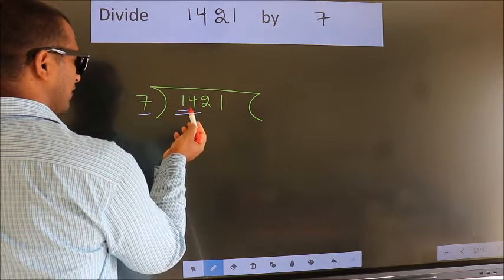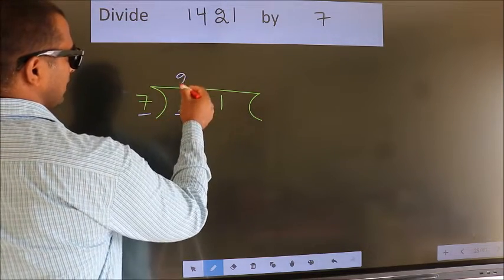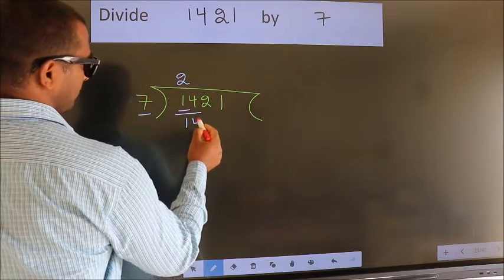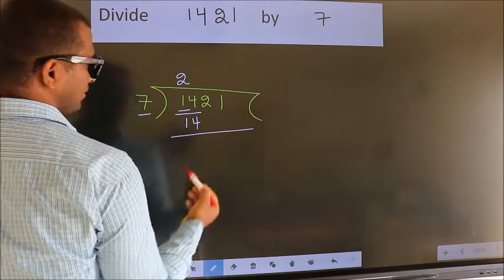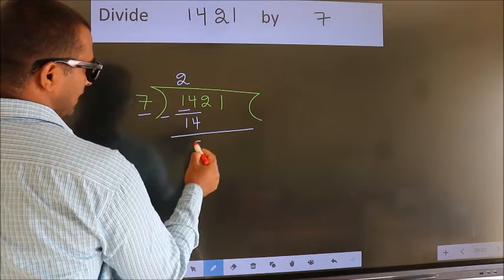When do we get 14? In 7 table. 7 twos, 14. Now we should subtract. We get 0.